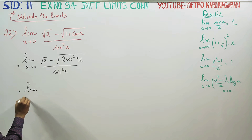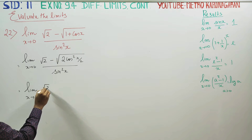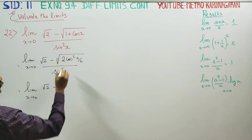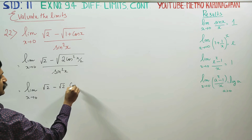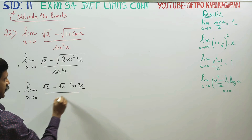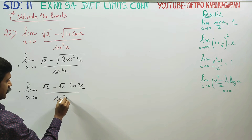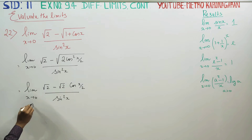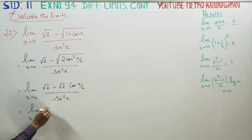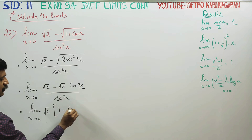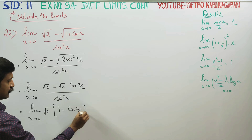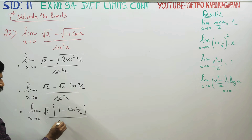Limit x turns to 0, root 2 — taking square and square root, they cancel — giving cos x by 2 divided by sin squared x. Limit x turns to 0: taking root 2 common outside, we get (1 minus cos x by 2) over sin squared x.